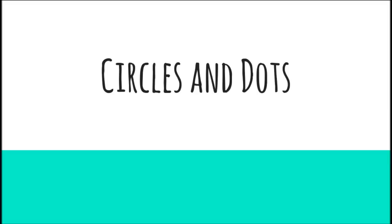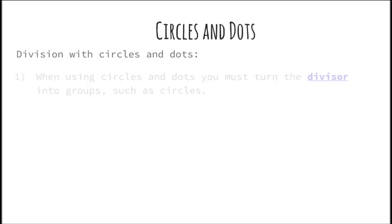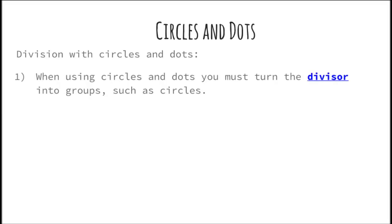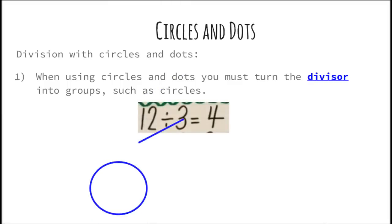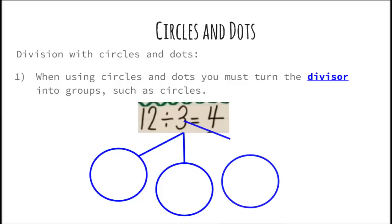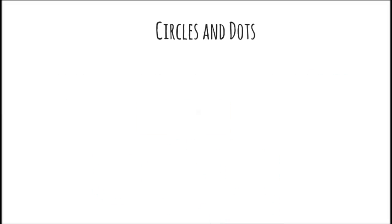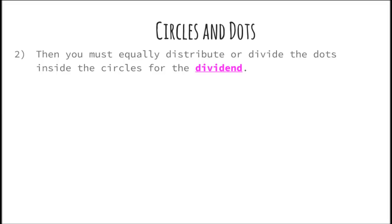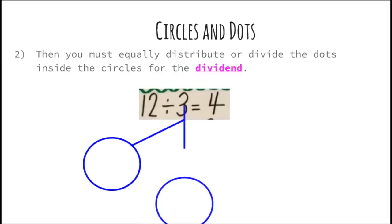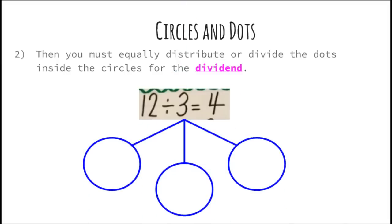The next strategy is circles and dots — division with circles and dots. When using circles and dots, you must turn the divisor into groups, such as circles. We're going to use the same problem. 3 is your divisor, so we will have 3 circles. The next step is you must equally distribute or divide the dots into the circles for the dividend. This is your problem again, with 3 as your divisor, so you must have 3 circles.